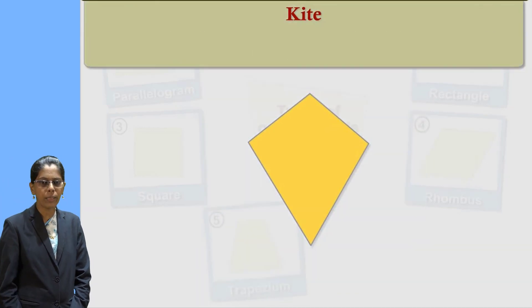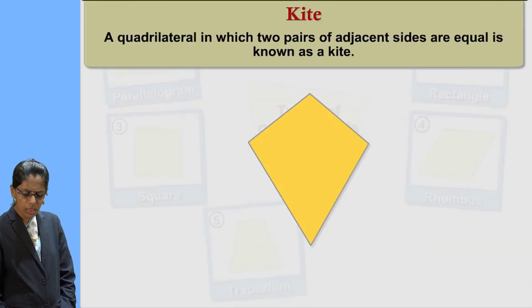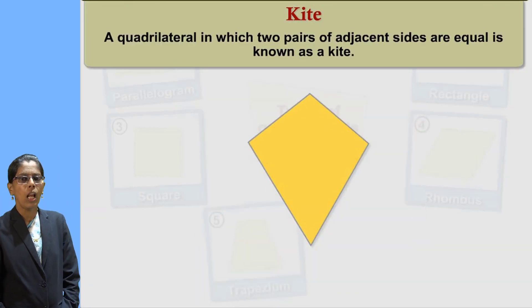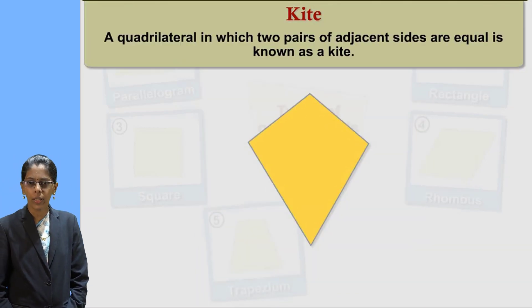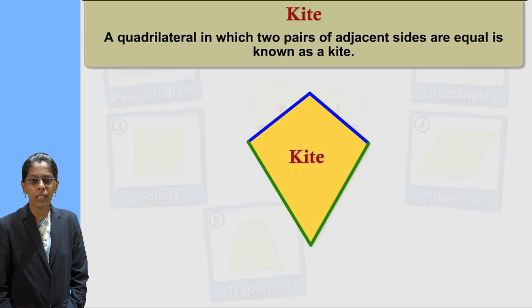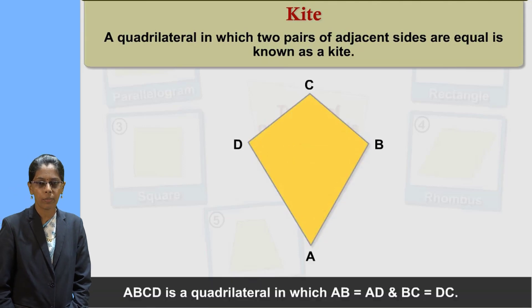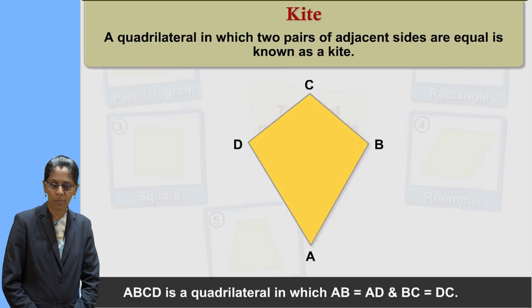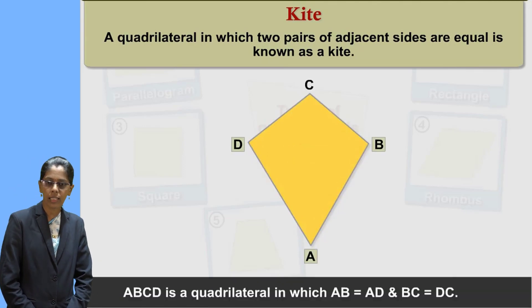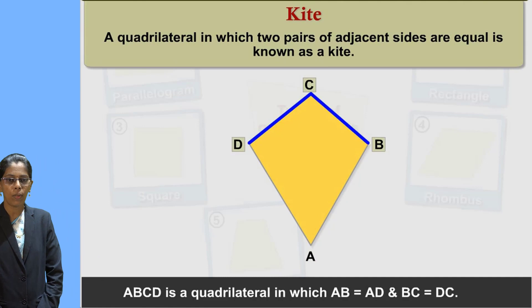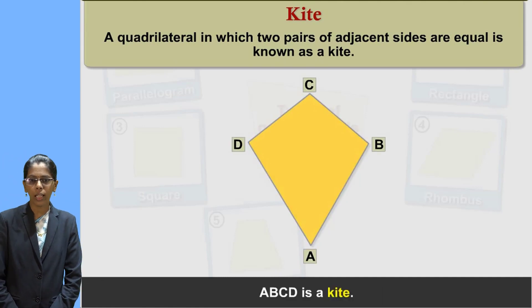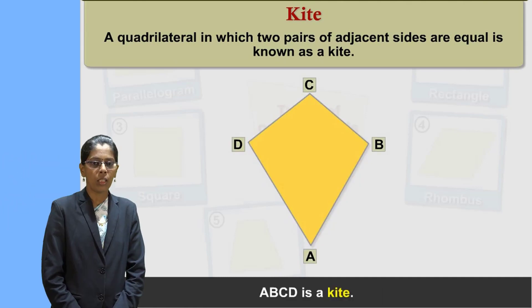The last point is kite. In this kite, we get adjacent pairs — that means whatever adjacent sides are given, those adjacent sides are equal in length. This is called a kite.